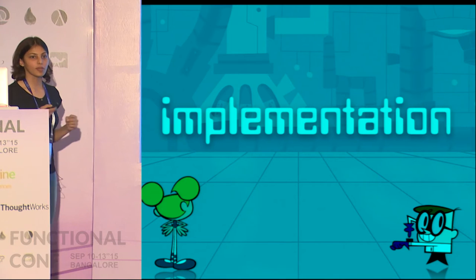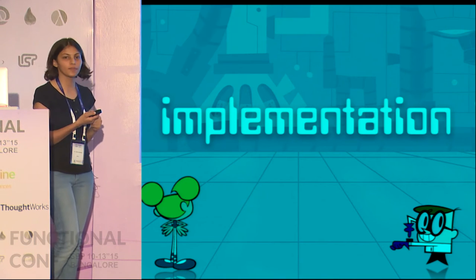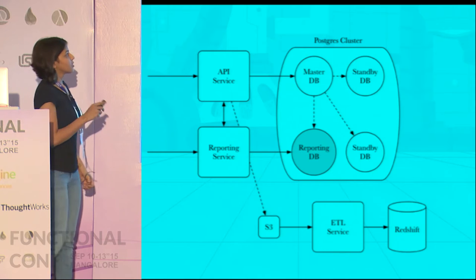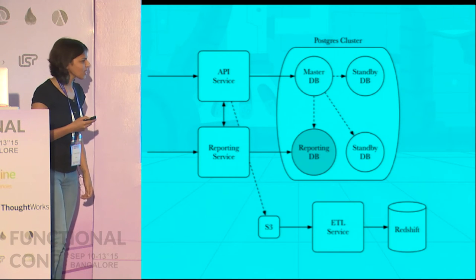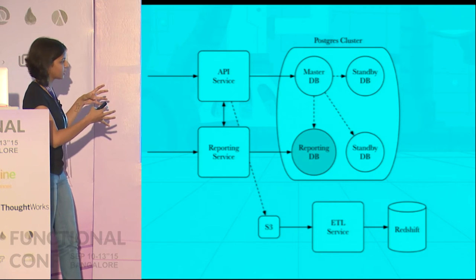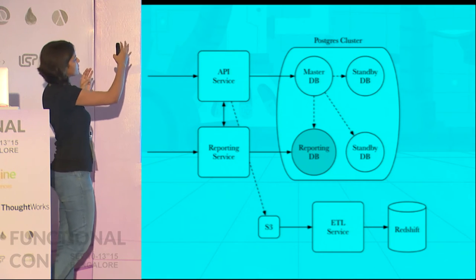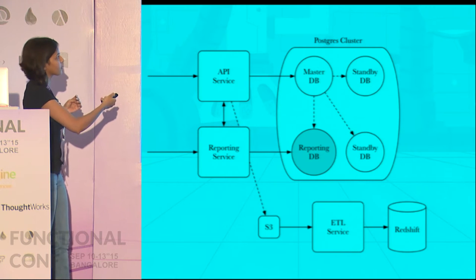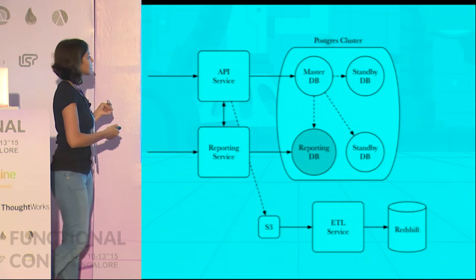The next section is the implementation details of the system we built. This is the overall structure of the system. It's not very complex, but there are four major parts: the API service, the reporting service, the Postgres cluster, and the ETL service.